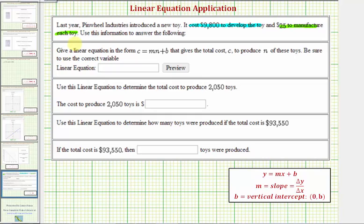Notice how there are two components to the total cost. We have the fixed cost of $9,800, which does not change regardless of how many toys are manufactured. And then we have the variable cost of $25 to manufacture each toy. Which means the total cost C is equal to $25 times the number of toys manufactured, which is N, plus the fixed cost or development cost of $9,800.